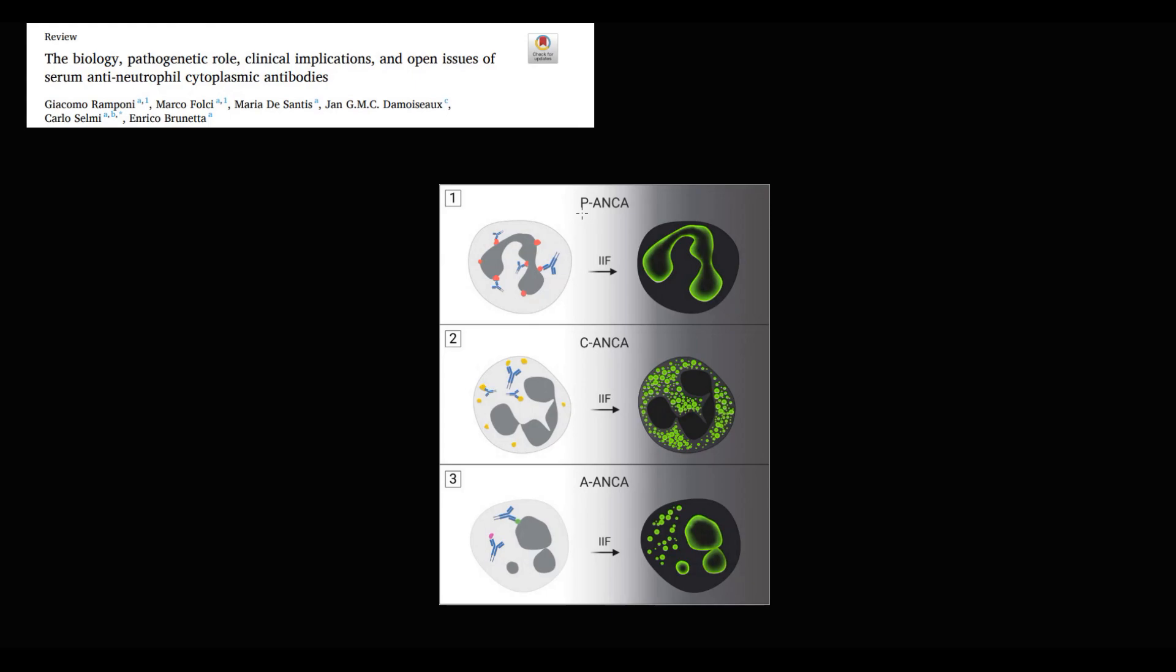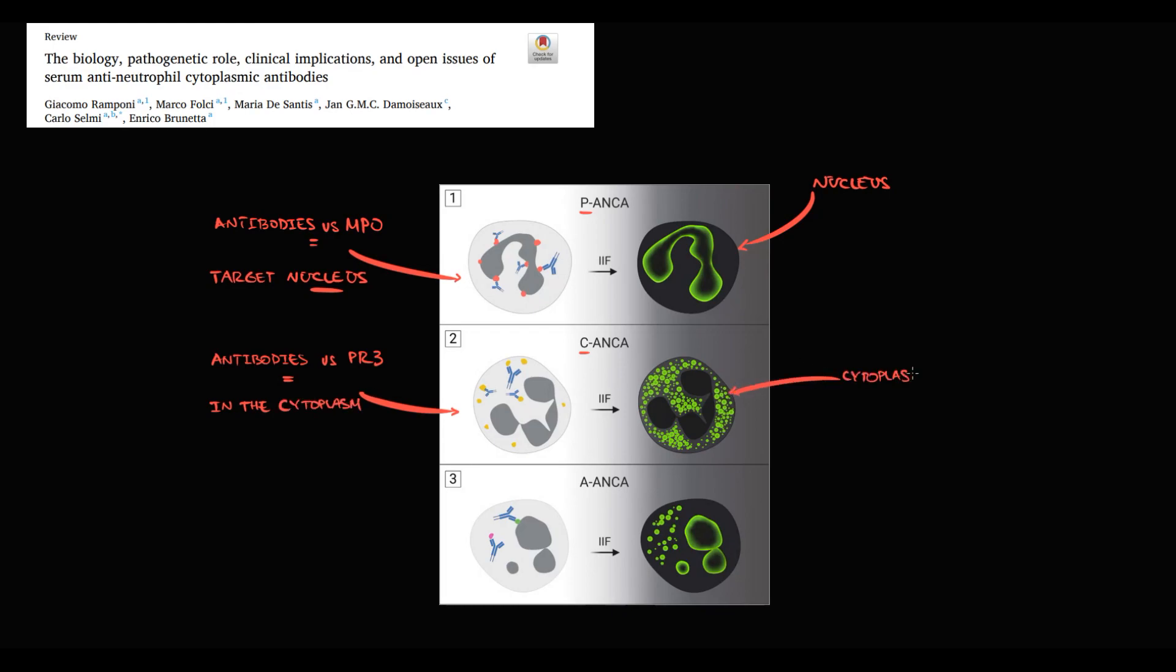So to summarize, if a disorder induces the production of antibodies against myeloperoxidase, such antibodies will bind to the nucleus. And antibodies which are located in the perinuclear region, we call P-ANCA. If a disorder induces the production of antibodies against PR3 enzyme, such antibodies will bind to enzymes which are located in the cytoplasm. And antibodies that are scattered throughout the cytoplasm, we call C-ANCA. Antibodies that have features of both P-ANCA and C-ANCA target both nucleus and cytoplasm. We call such antibodies atypical ANCA.